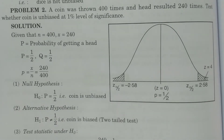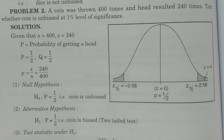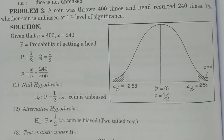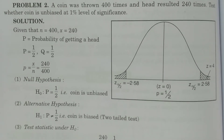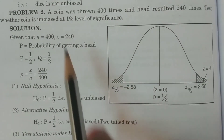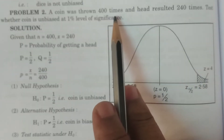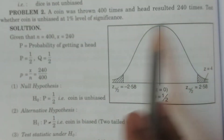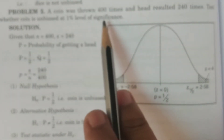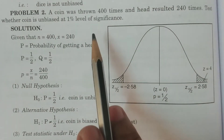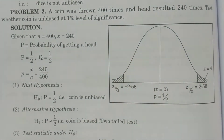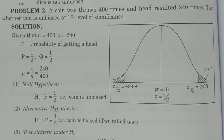First, identify whether this is a one-sample or two-sample problem. The coin was thrown 400 times — so n is equal to 400. This is a single sample problem.